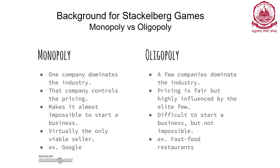To characterize the difference between monopoly and oligopoly: when one company dominates the industry that is monopoly, and that company has all the power to control pricing — entering the market is almost impossible. In an oligopoly, a few companies dominate the industry; pricing is quite fair but highly influenced by these elite few, and it is difficult though not impossible to start a business. An example is fast food restaurants — Burger King, McDonald's, KFC — they all lead the fast food chain, and entering with a different company is generally very tough.